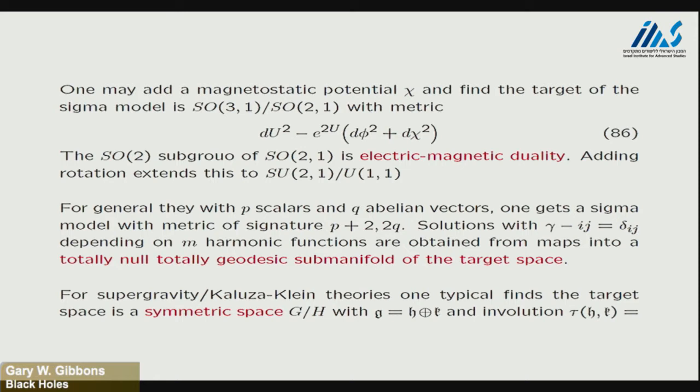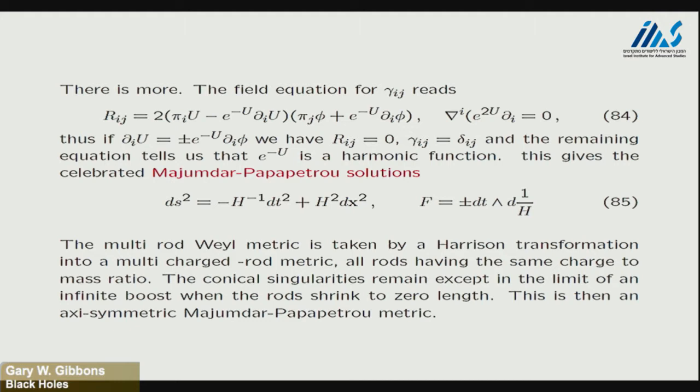You can add a magnetostatic potential and basically what happens is you get this SO(2) transformation, SO(2) symmetry, which is just electric magnetic duality symmetry. There's no difference between electromagnetism, I mean magnetism and electrostatics. Okay, and that actually, when you put the rotation in, extends to a big group which is SU(2,1) over U(1,1). And that's sort of characteristic. So the general rules are that if you've got P scalars and Q abelian vectors and you do this reduction, in general you get a sigma model whose target will have P plus 2, that's 2 for gravity, plus the scalars with positive sign and 2Q with negative sign because for each vector you get both the electric and magnetic scalar fields.